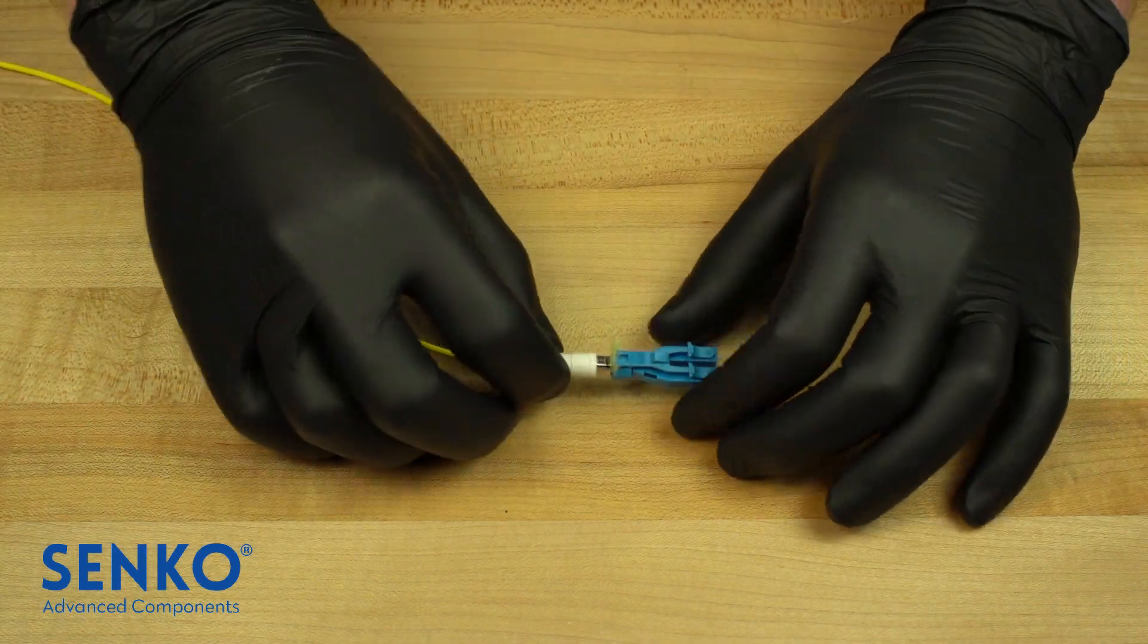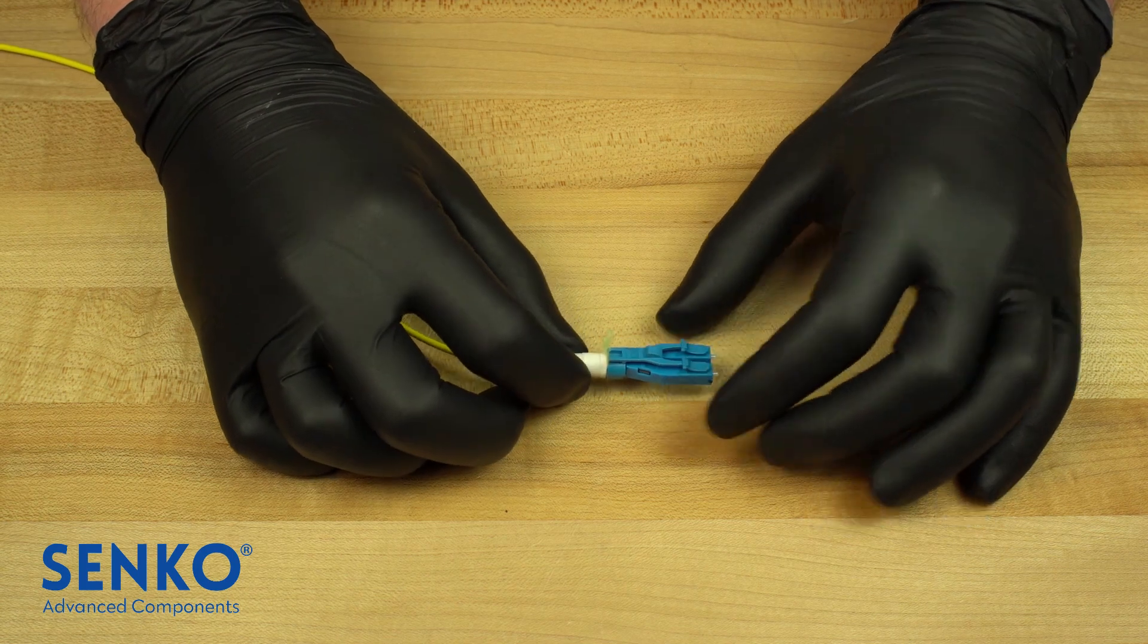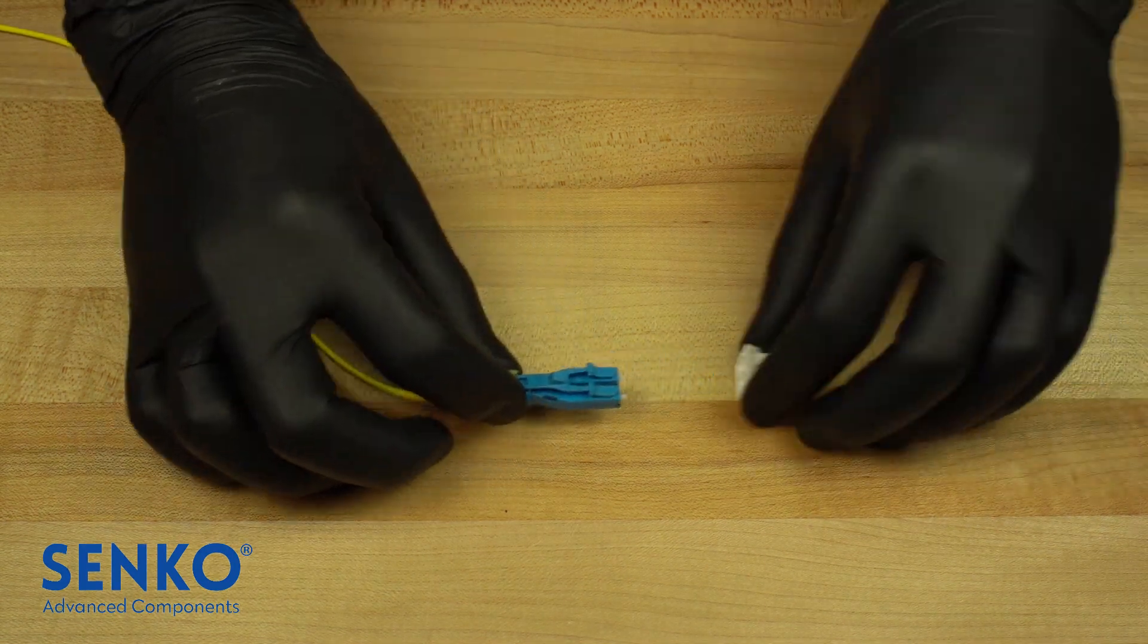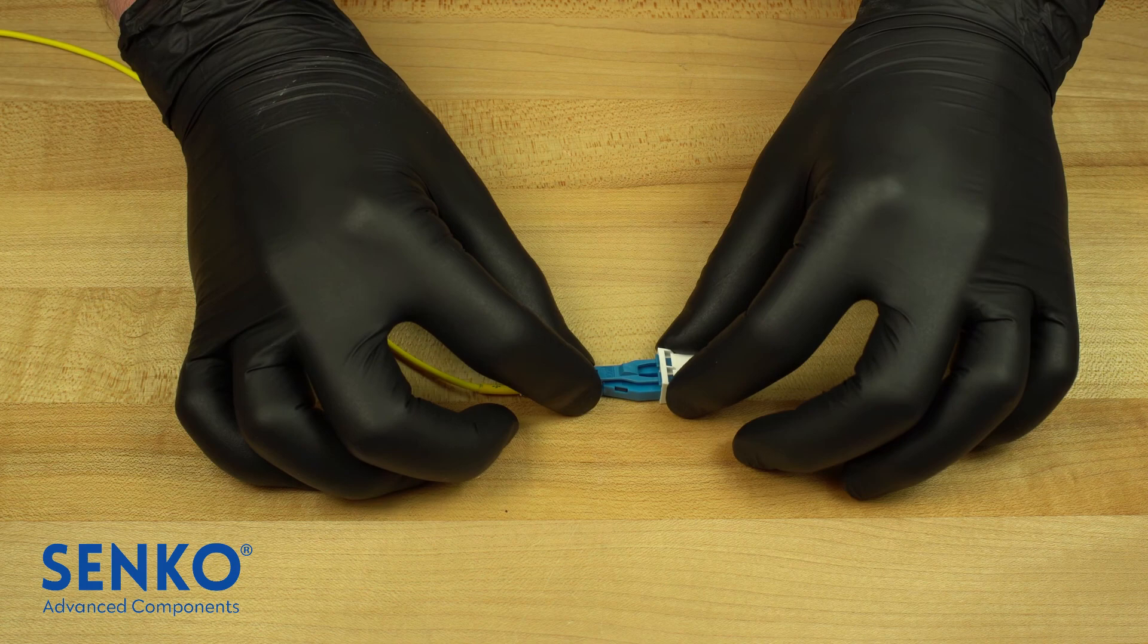Install the boot over the crimp ring and the termination is now complete. Now that the connector assembly is complete, the connector can be polished.